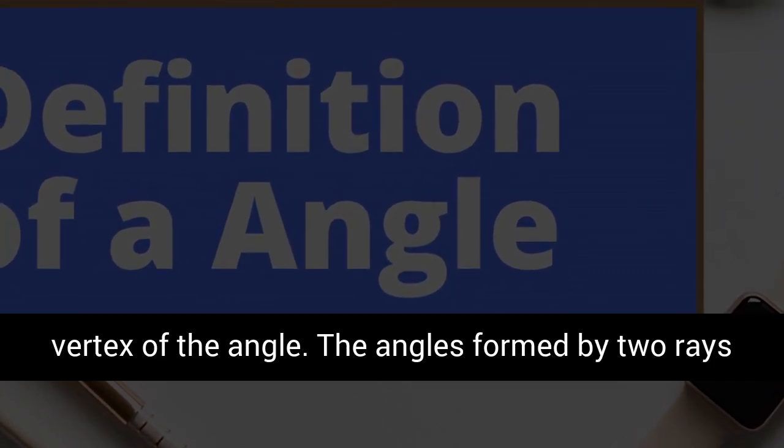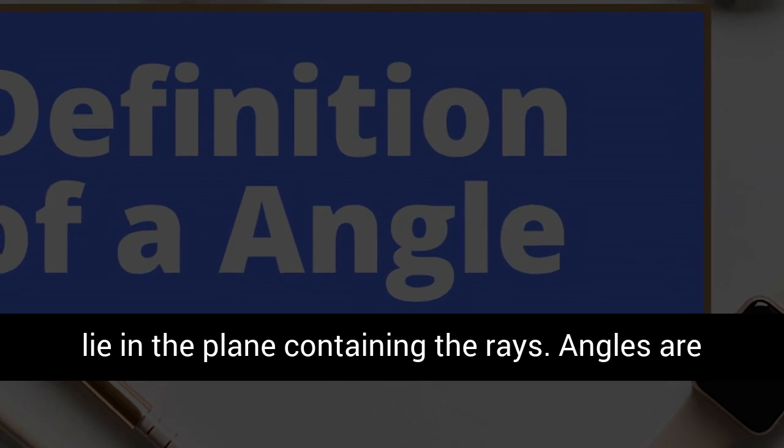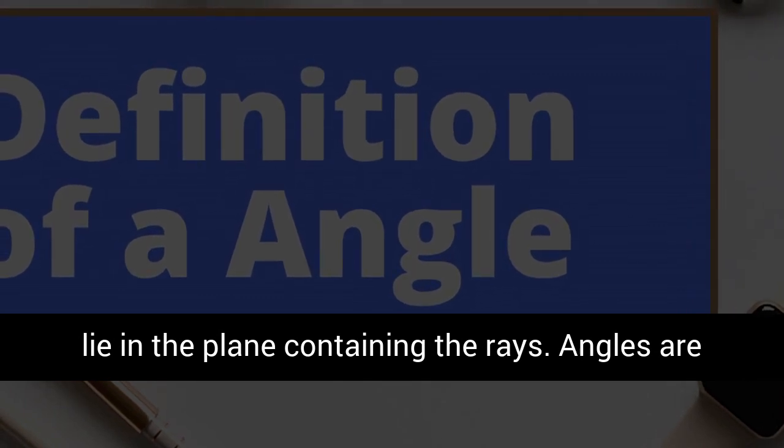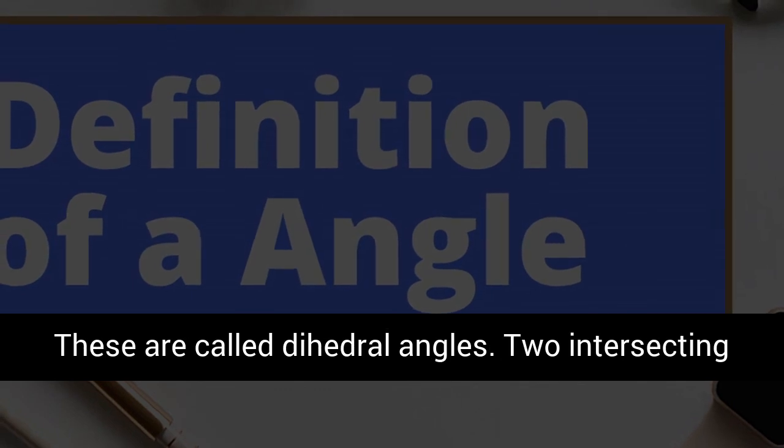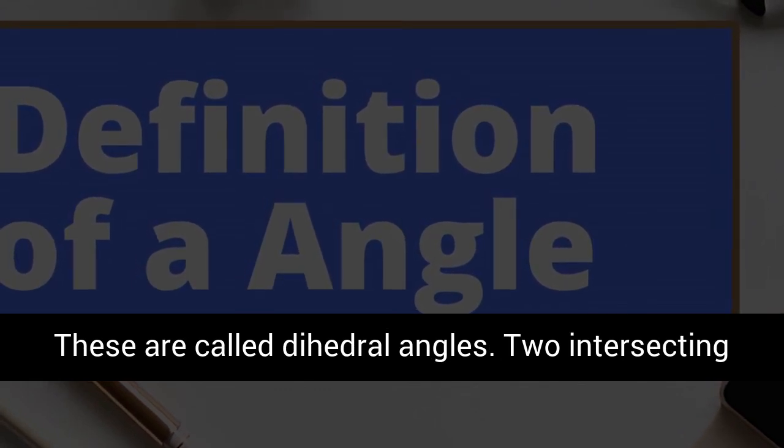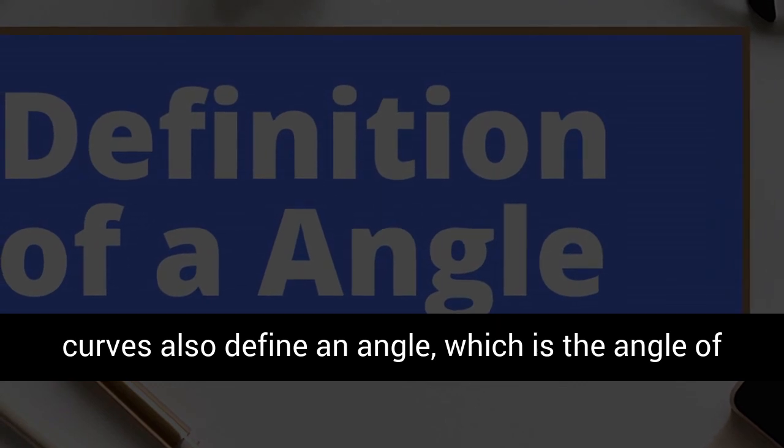The angles formed by two rays lie in the plane containing the rays. Angles are also formed by the intersection of two planes. These are called dihedral angles. Two intersecting curves also define an angle, which is the angle of the tangents at the point of intersection.